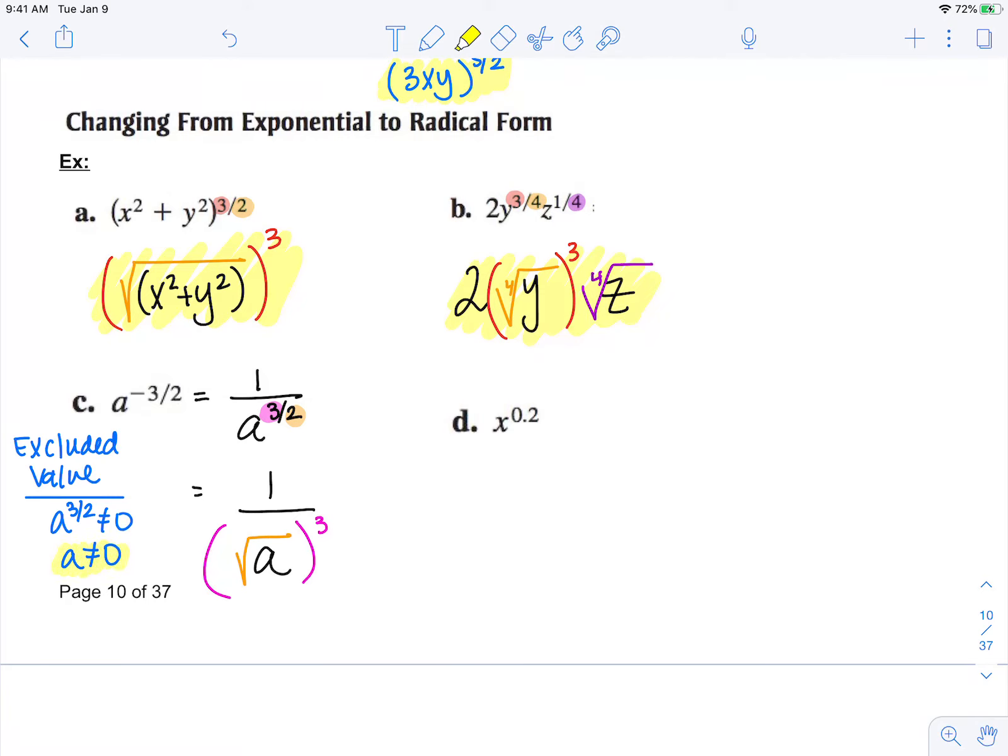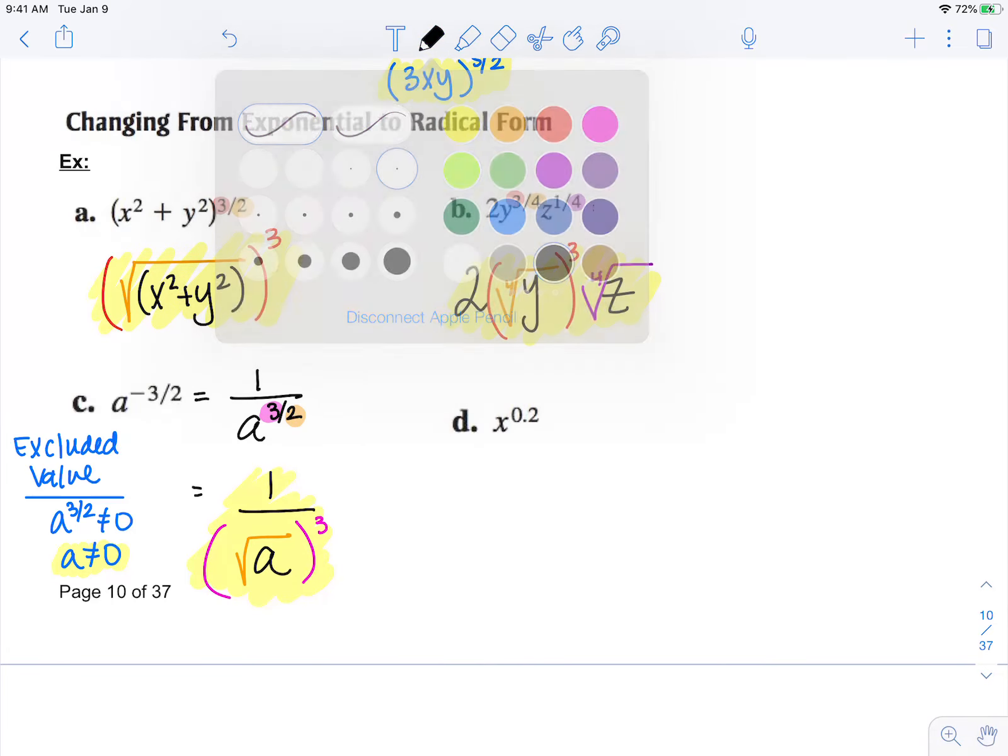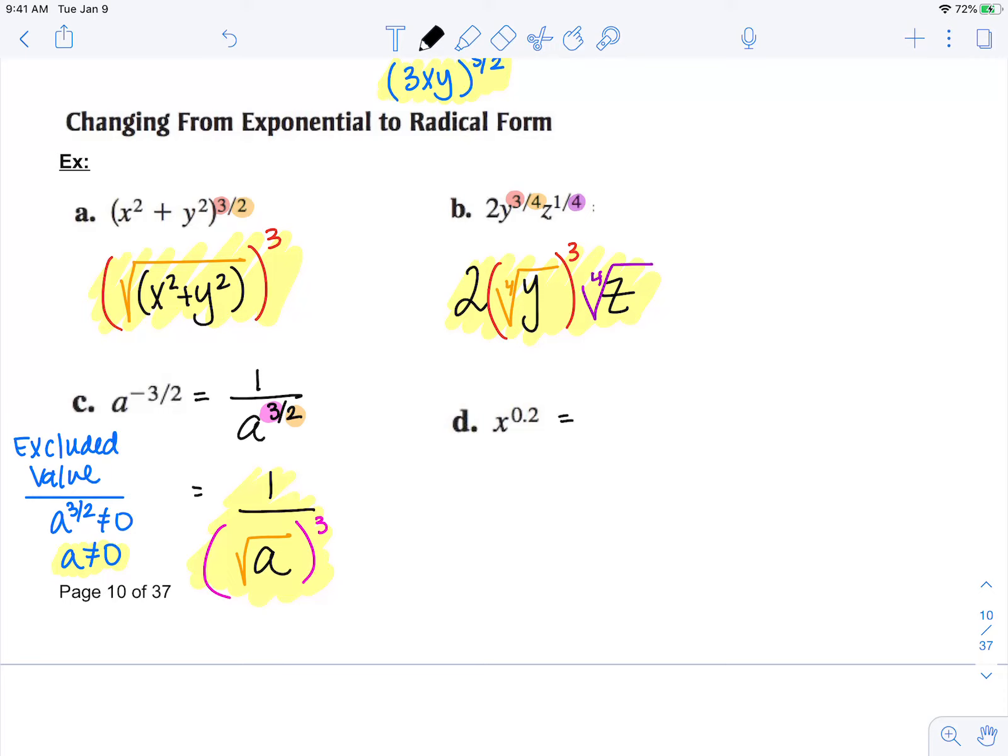Now in part d, we have a decimal, but remember a decimal is a fraction. This is x to the two tenths. If I simplify that, that's x to the one fifth.